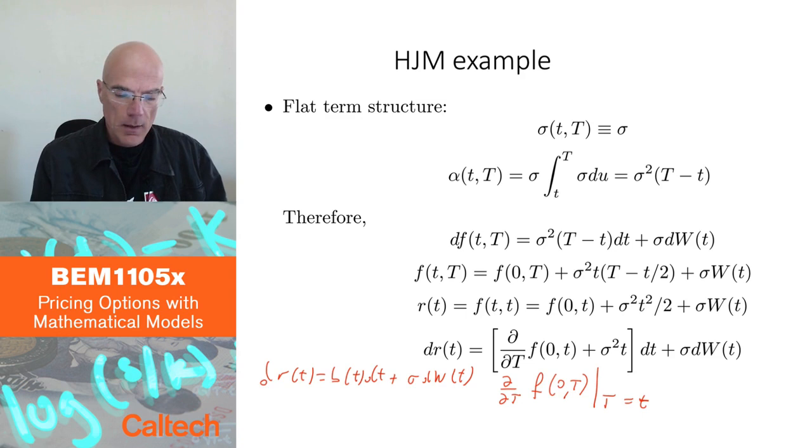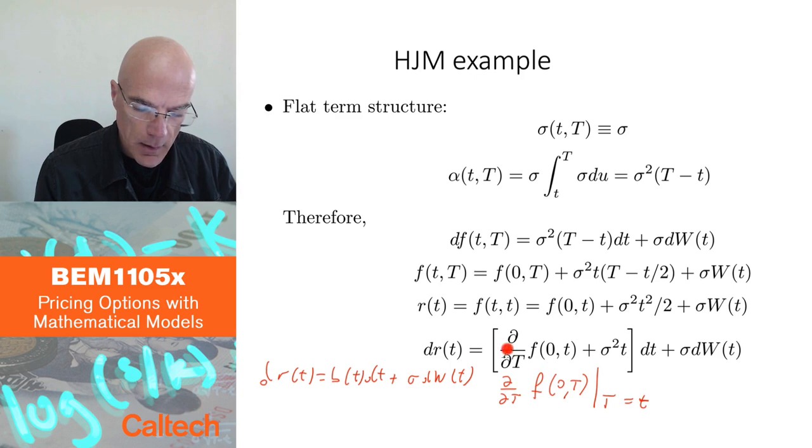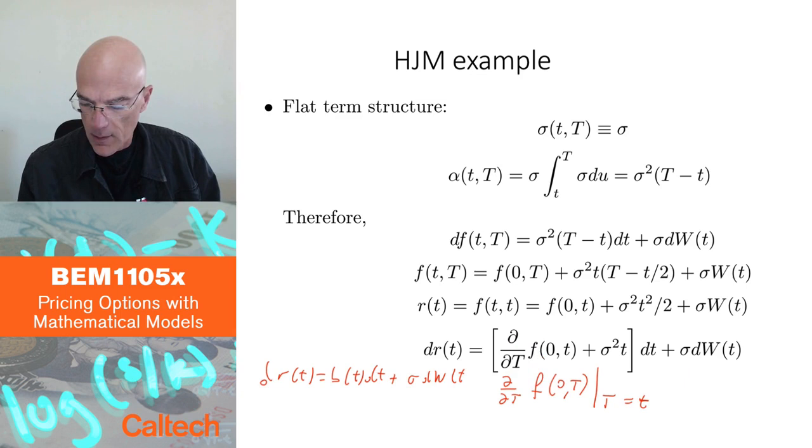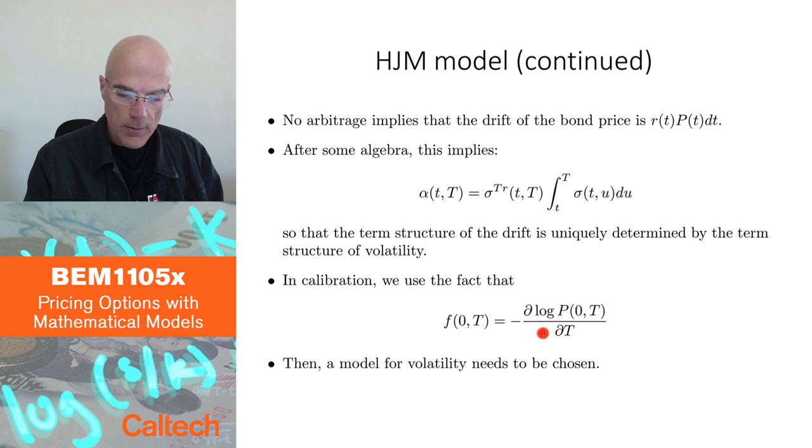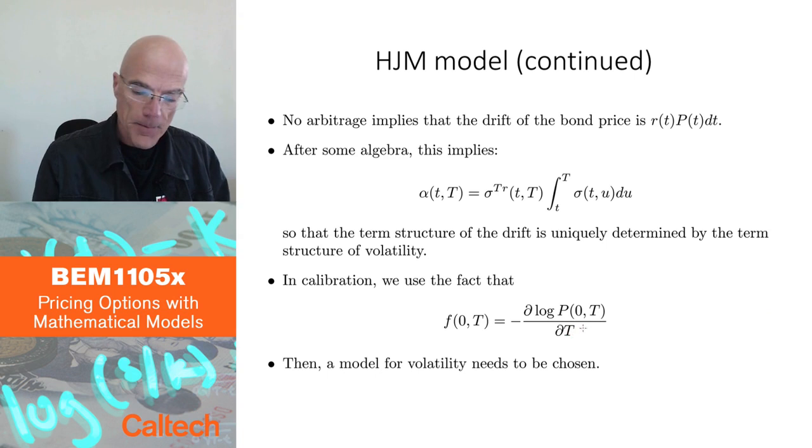If you take a look here, I'm taking a derivative of this function f. And then function f itself, if we go back, function f itself is a derivative. So we are, to implement this in practice, we will have to compute a derivative with respect to maturity of log of bond prices. And bond prices we only observe discretely. So you have to compute the derivative of a function that you only observe discretely.